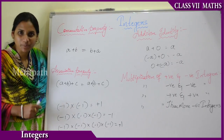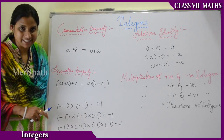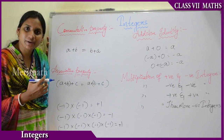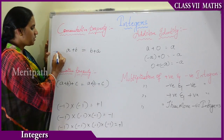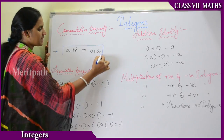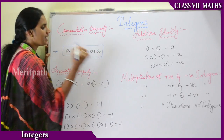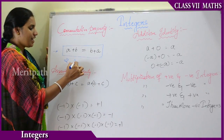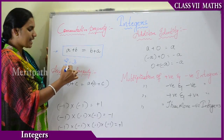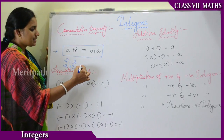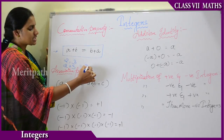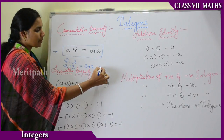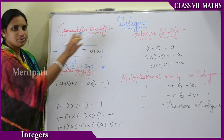Let us discuss the important properties of integers. First, let us discuss the commutative property. Commutative property states that a plus b equals to b plus a. For example, taking two numbers 2 and 3: 2 plus 3 equals 5, and 3 plus 2 equals 5. Therefore LHS equals RHS, and this property is known as the commutative property.